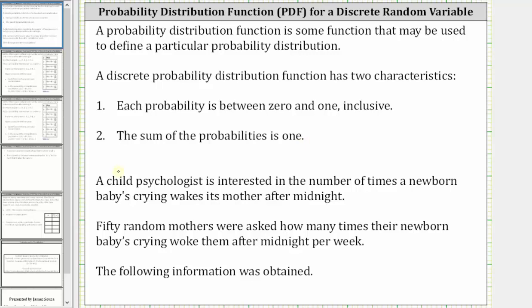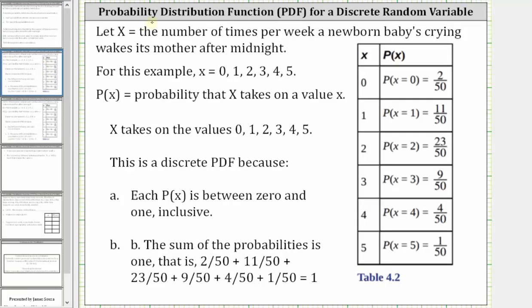As an example, a child psychologist is interested in the number of times a newborn baby's crying wakes its mother after midnight. So 50 random mothers were asked how many times their newborn baby's crying woke them after midnight per week. The following information was obtained. We let the random variable x equal the number of times per week a newborn baby's crying wakes its mother after midnight.